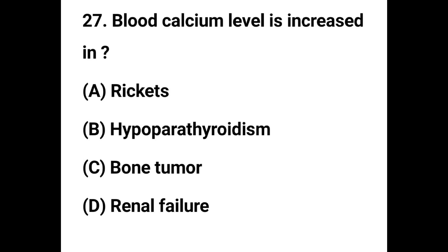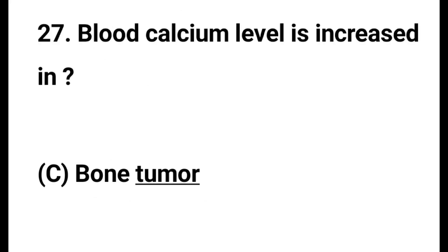Question number 27. Blood calcium level is increased in: Option A - Rickets, Option B - Hypoparathyroidism, Option C - Bone tumor, Option D - Renal failure. The correct answer is Option C, Bone tumor. Blood calcium levels are increased in bone tumor.